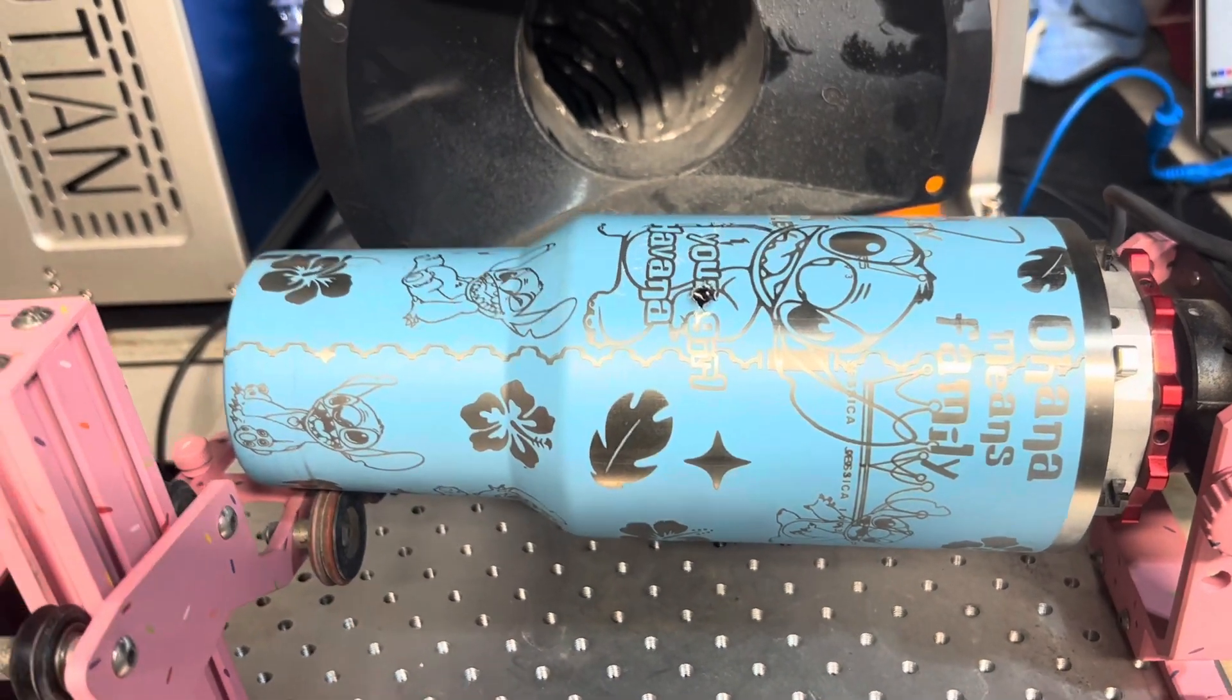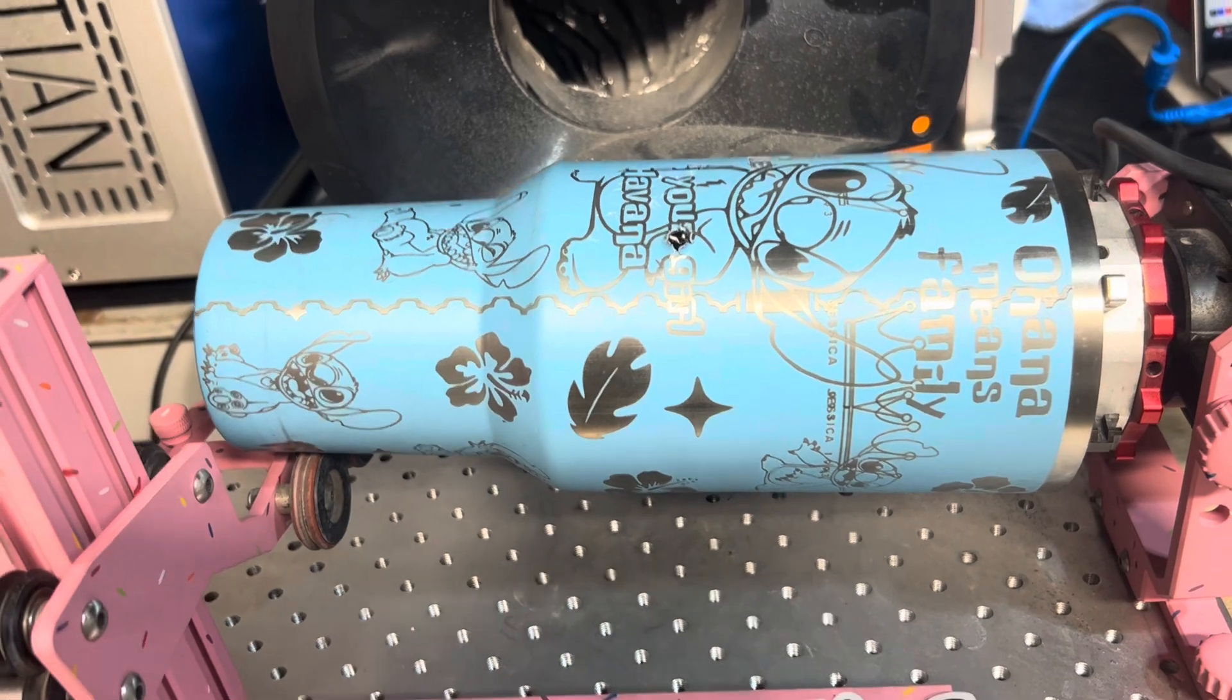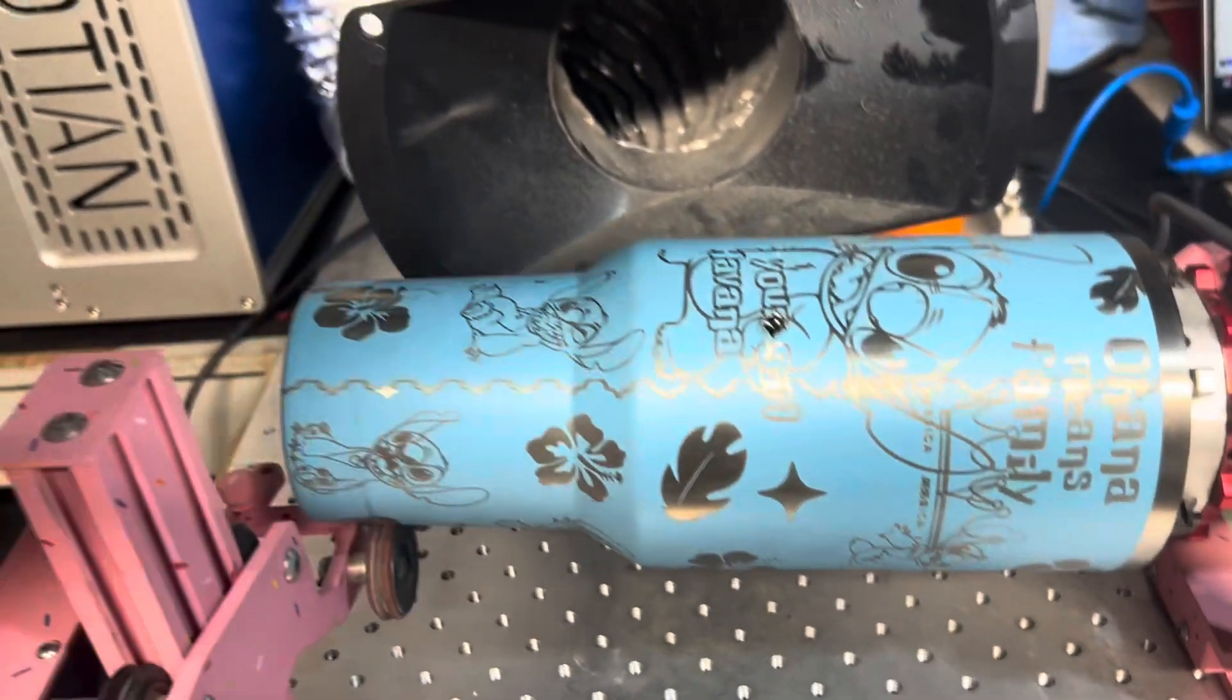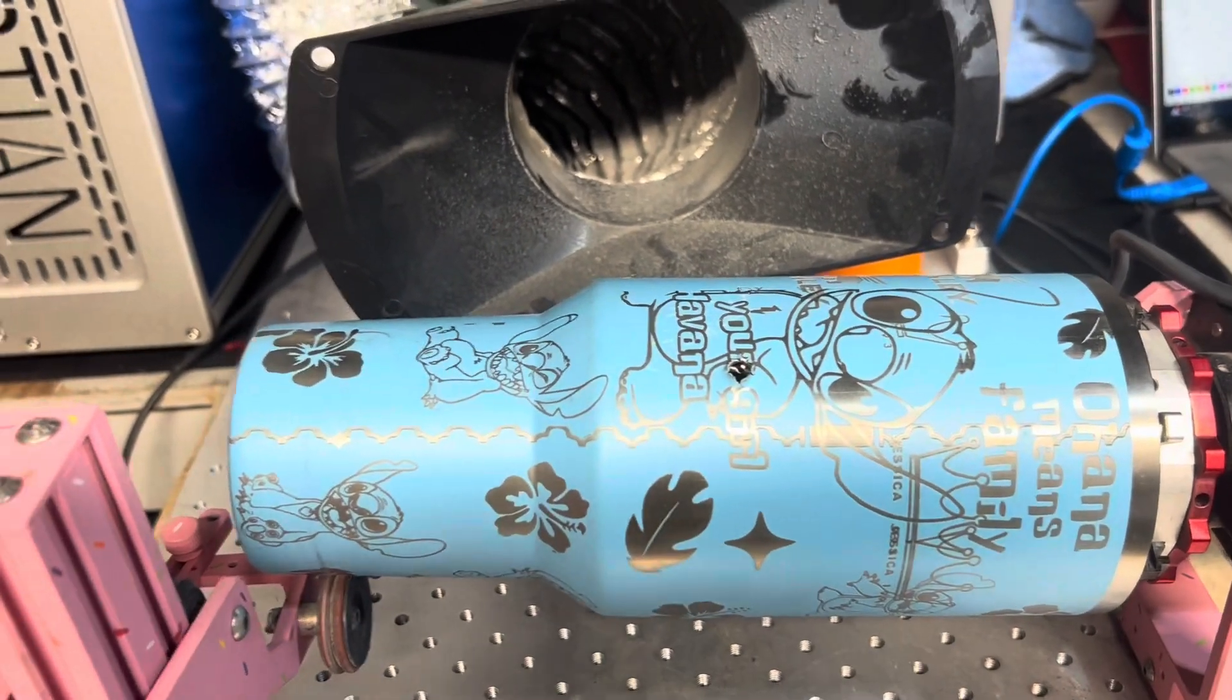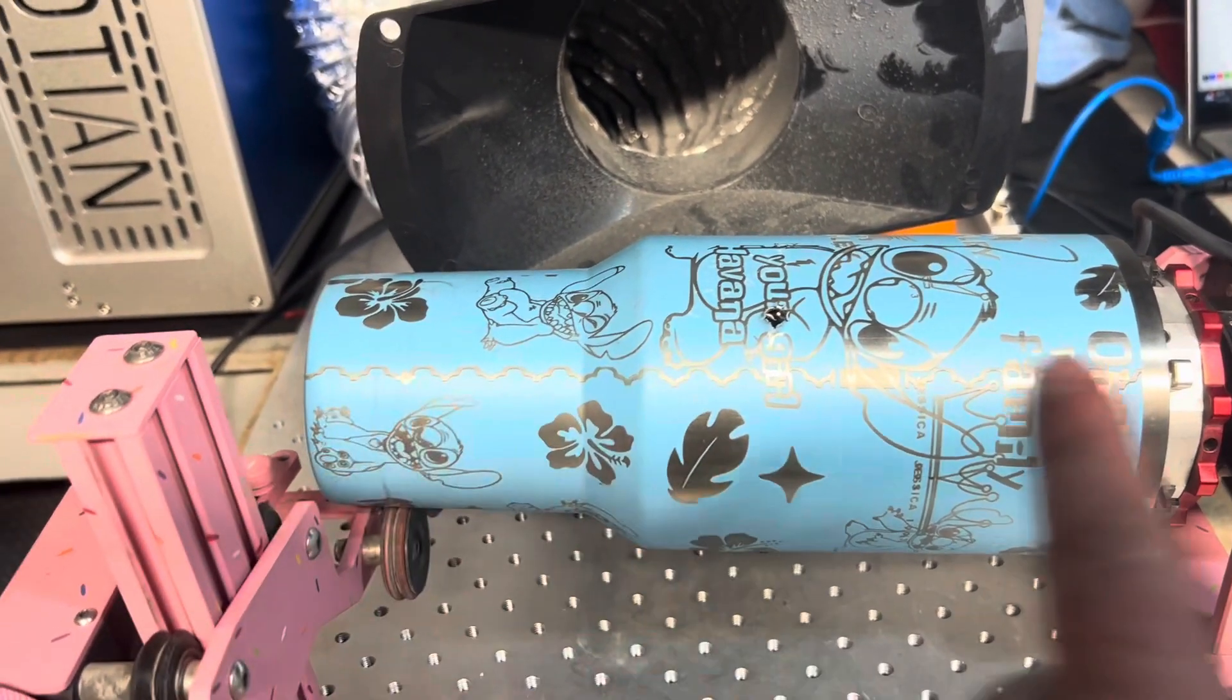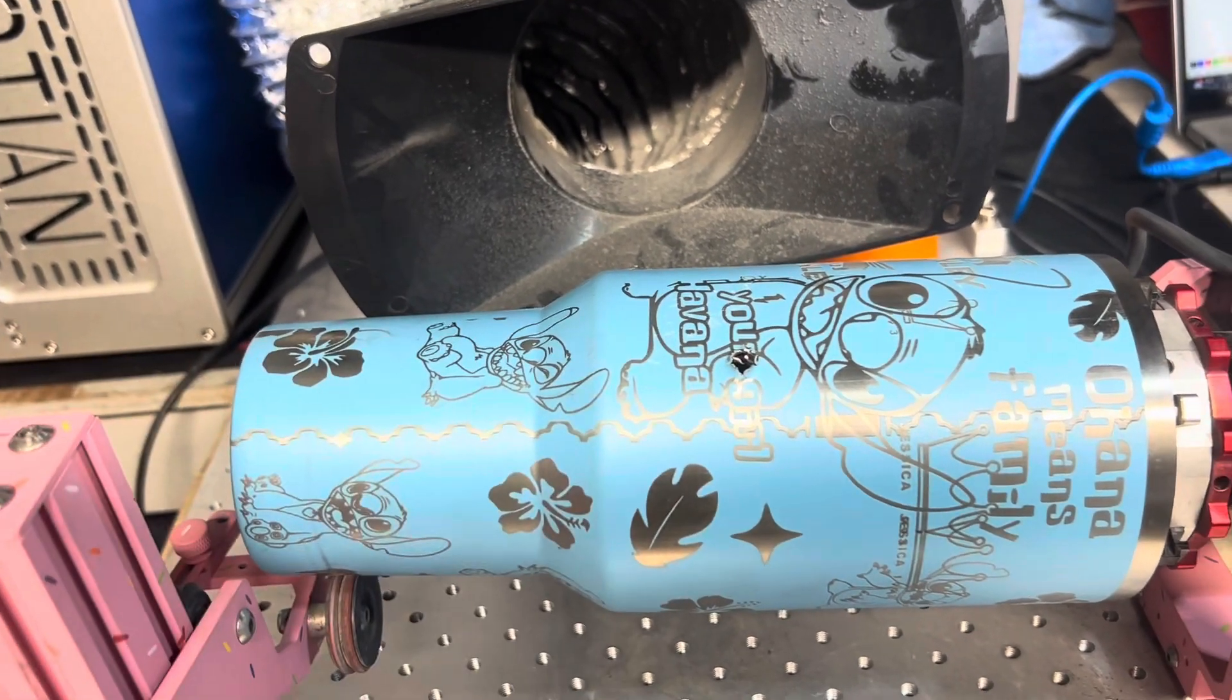First thing we want to do is talk about what split size is. So on a galvo laser, it's a little bit different than a gantry laser. The galvo laser, your beam can actually move to different spots, whereas on your gantry laser, your laser can only laser on the spot of the cup that's underneath it.